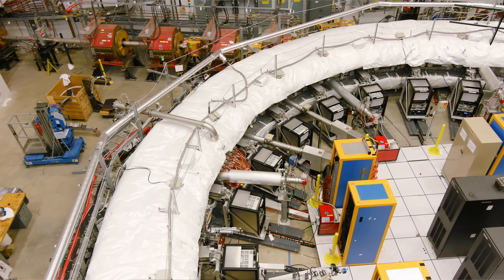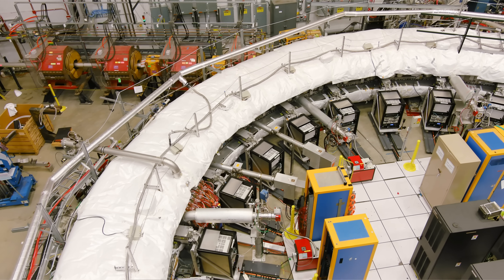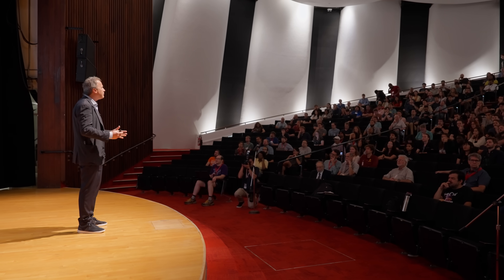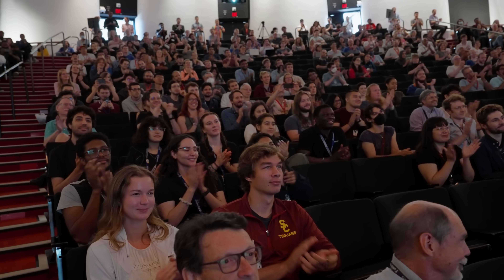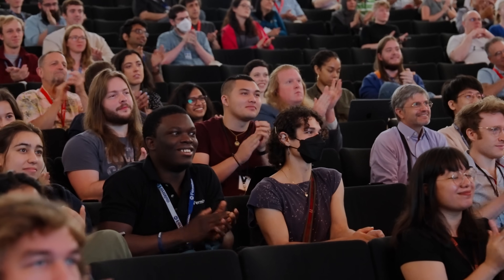In 2021, the muon G-2 experiment published their first result — our first milestone. Then in 2023, that was our second publication covering RUN 2 and RUN 3, where we measured twice as precisely as before. This final result will include all our data from RUN 1 through RUN 6.